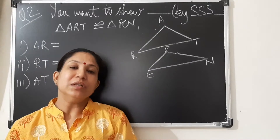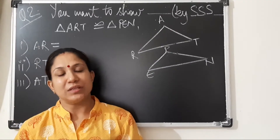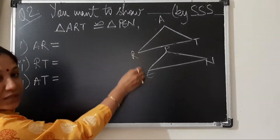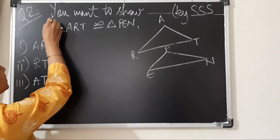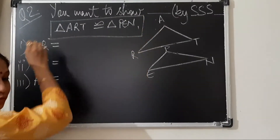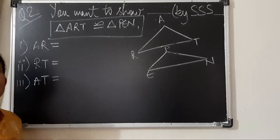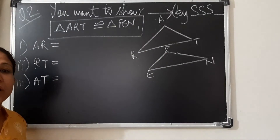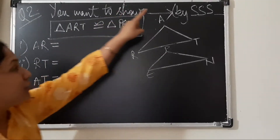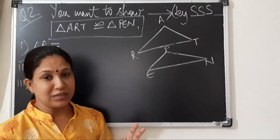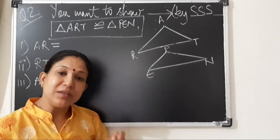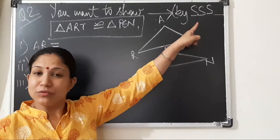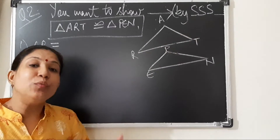Now we are going to start with the second question in this session. In the second question, they are saying that two triangles are given. The figure is given along with certain information, and you have to prove that these two triangles are congruent. They have also mentioned that you have to show this by using the side-side-side congruence criteria.